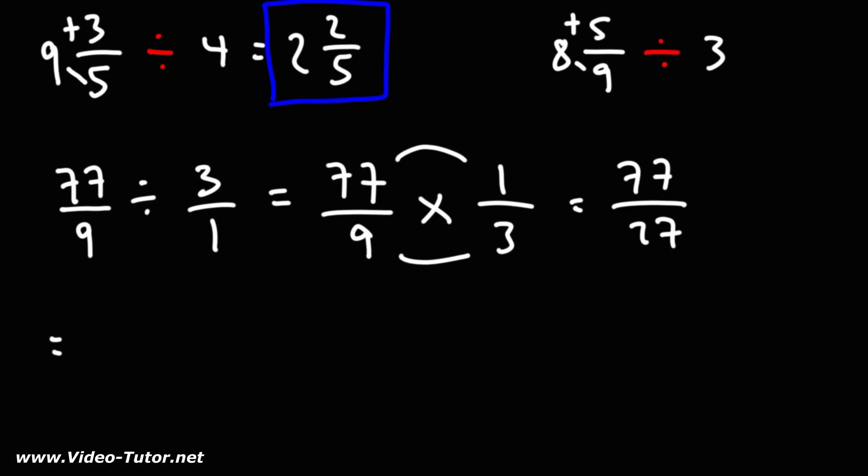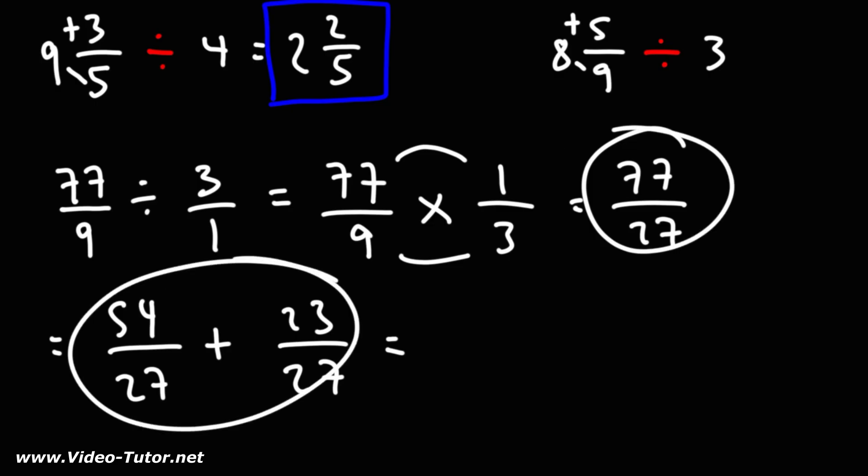The highest multiple of 27 just under 77 is 54. And 77 minus 54 is 23. So we could break up this fraction into these two fractions. 54 plus 23 is 77.